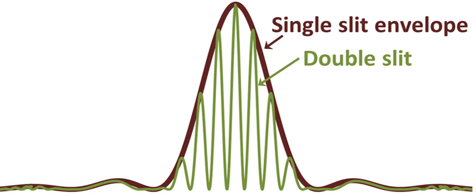lambda equals v over f, where v is called the phase speed magnitude of the phase velocity of the wave and f is the wave's frequency.